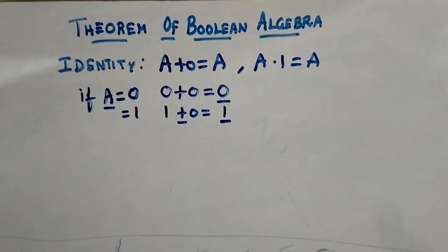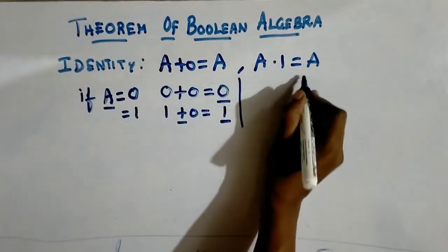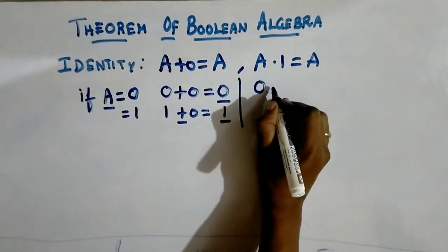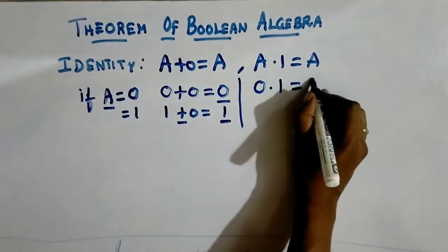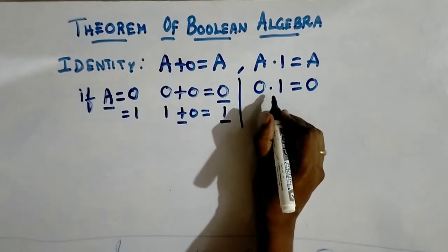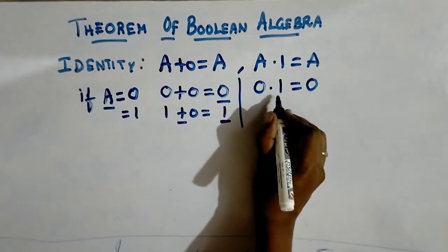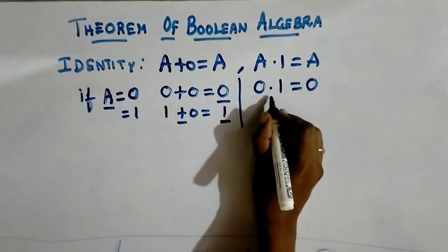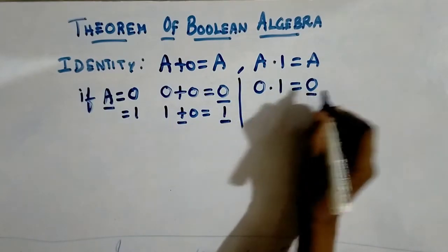Similarly, we will see for a dot 1. How are we getting a dot 1 equal to a? When I substitute a value as 0: 0 dot 1 equals what? 0 dot 1 is 0. Dot is nothing but the AND operator. What is the property of the AND operator? Both inputs should be 1 — then only you will get output as 1. So here 0 dot 1, the answer is 0, which is the a value.